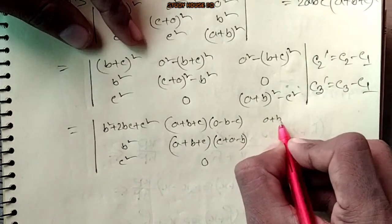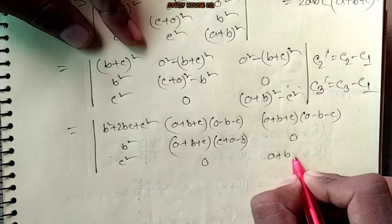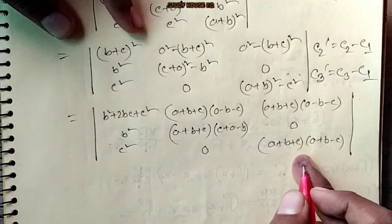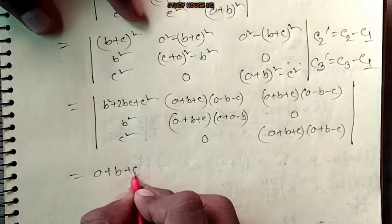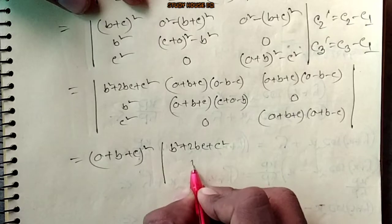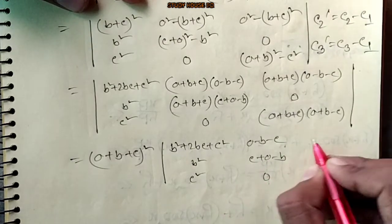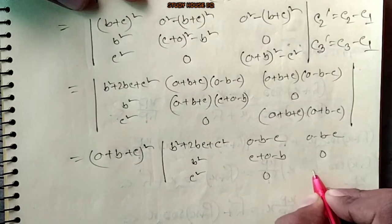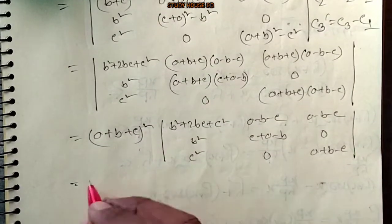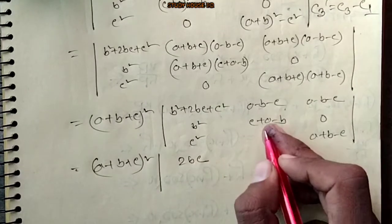a plus b plus c, a minus b minus c. This column is 0. This column is a plus b plus c, a plus b plus c, a plus b minus c, a plus c squared, a plus c squared, a minus b minus c. a plus c plus a minus b. 0, a plus b minus c, a plus b minus c.